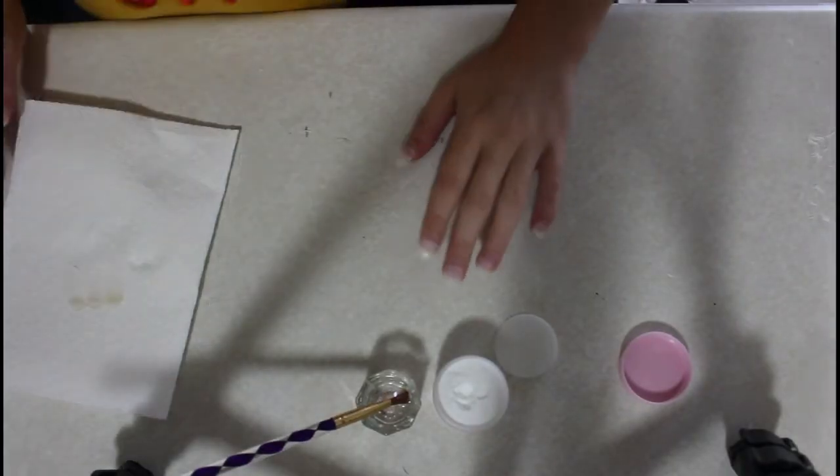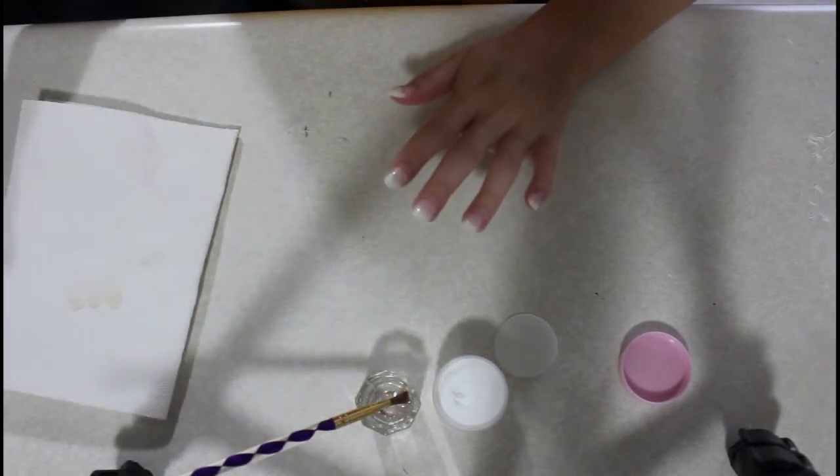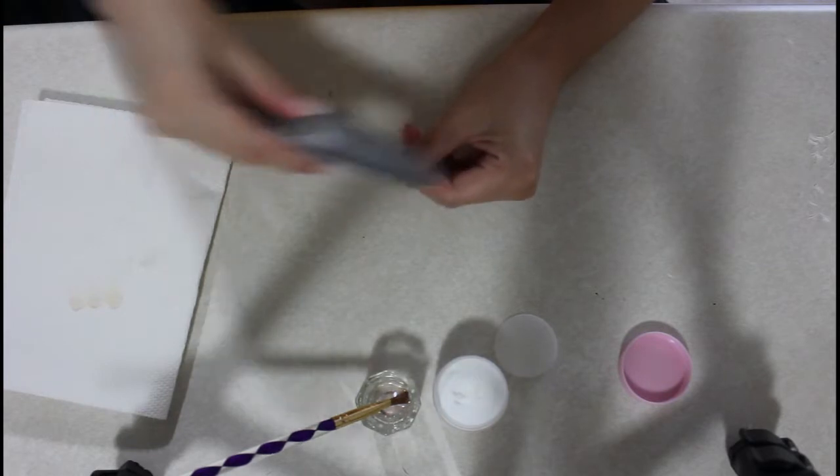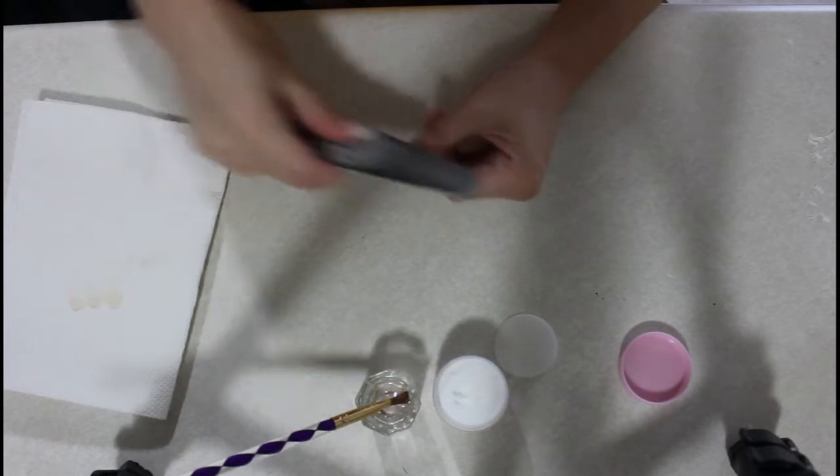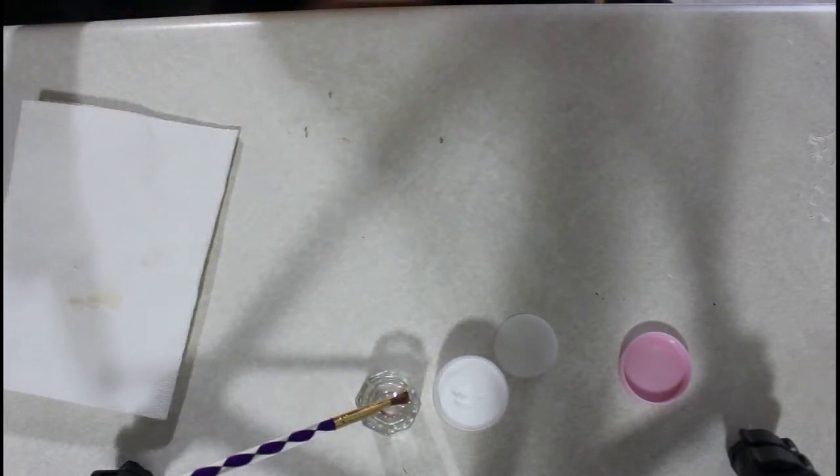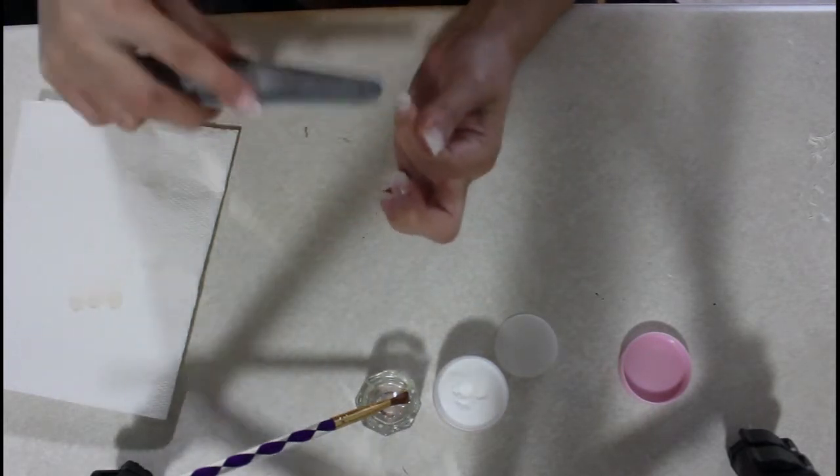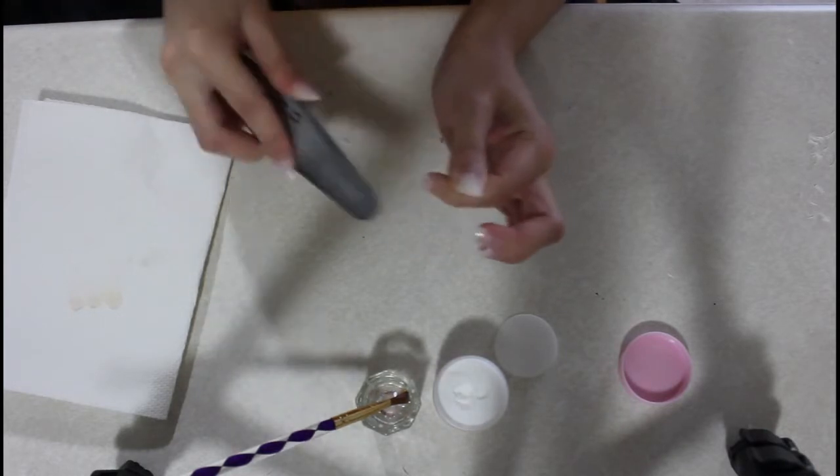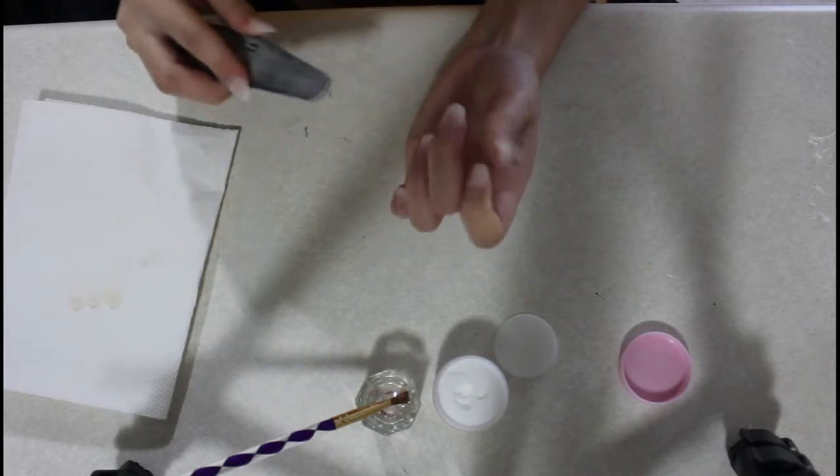So I started doing the acrylic on my thumb and then I realized I forgot to buff the nail or even use any dehydrator. So I'm going to buff the fake nails, the fake tips, just to get rid of that shine that it could have on it and have it a little more blended in with the natural nail as well.